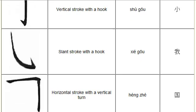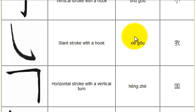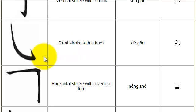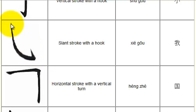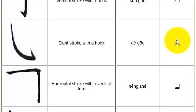Next we have xie gou. Xie means diagonal and gou means hook, so it's a slanted stroke drawn with a hook at the end. You start at the top, draw down towards the right, and hook it. Here's an example of xie gou being used in this character.